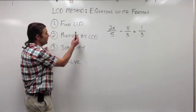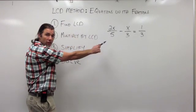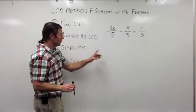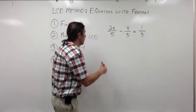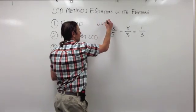Alright, we're using the LCD method here. Step 1 is to find the LCD of all the denominators in the fractions. Well, I have a 5, a 3, and a 3. The LCD of all three of those denominators is 15.